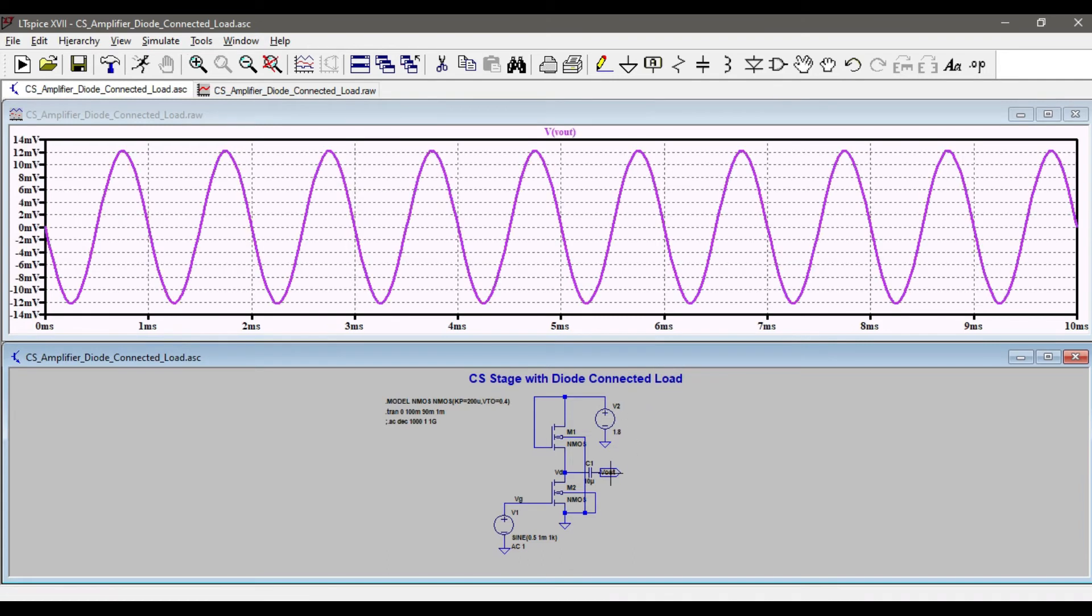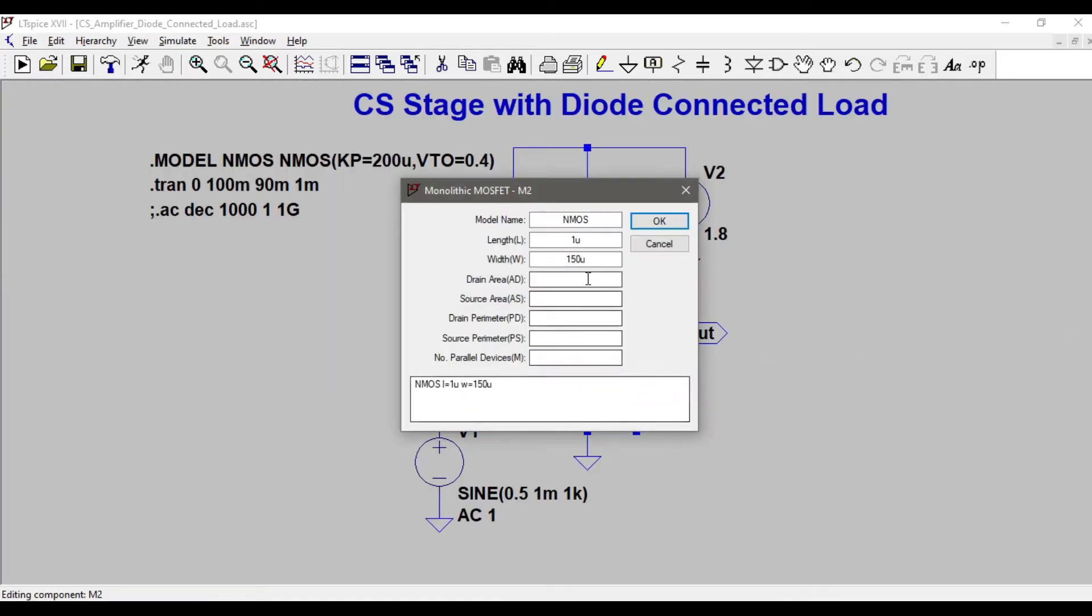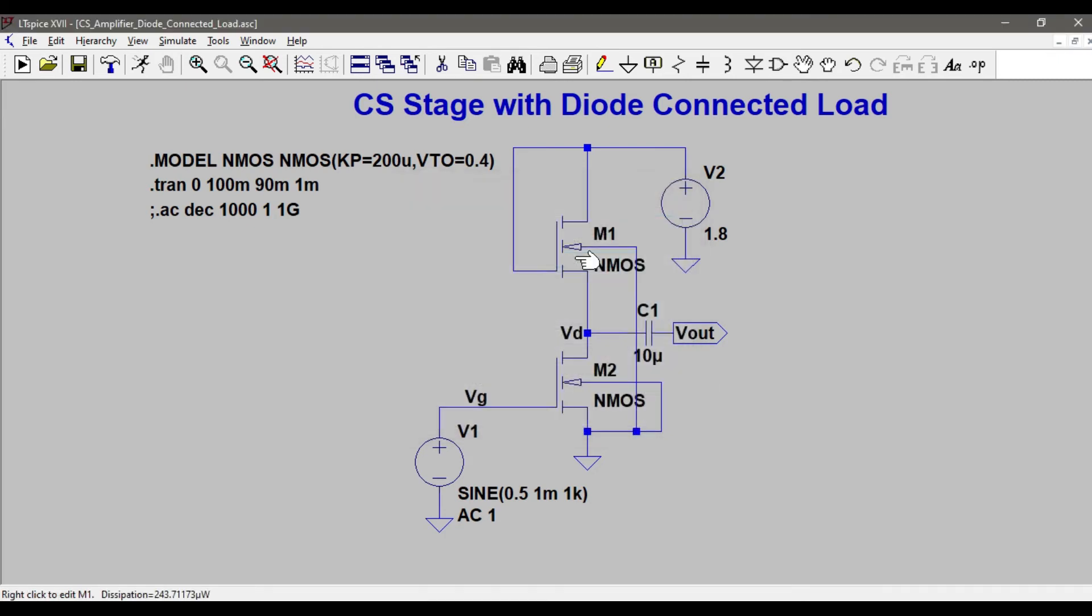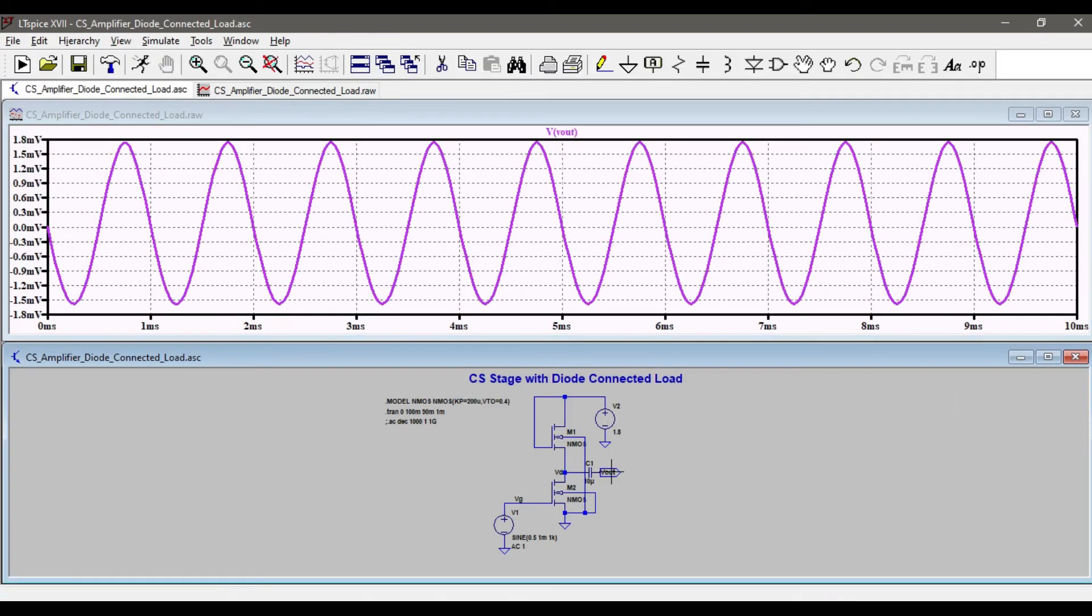And let us see again by increasing the W by L ratio. I'll increase it to 200. Let's see if it increases the gain. I'll run the simulation again, click on output, but it hasn't increased the gain. What might be the reason?